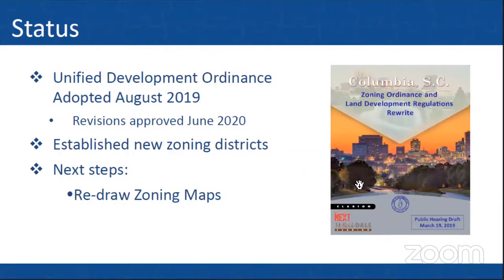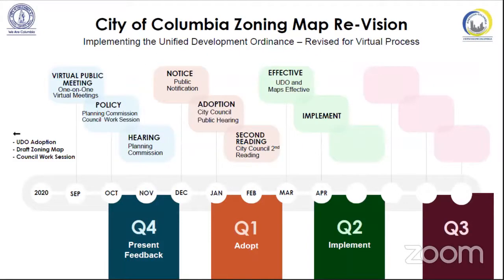The ordinance was adopted in August of 2019. This was text only. Then we had some revisions approved in June. Through these adoptions, we established new zoning districts. Because all of our districts are changing, that meant we needed to redraw our zoning maps. So we're going to have our virtual public meeting, which we're doing right now, and then we're going to be offering one-on-one virtual meetings. The maps will need to go to planning commission, and then it will need two readings by council. Our goal is to go to planning commission in either November or December of this year. It'll go to council for zoning public hearing in January, with an effective date of March 31st, 2021.